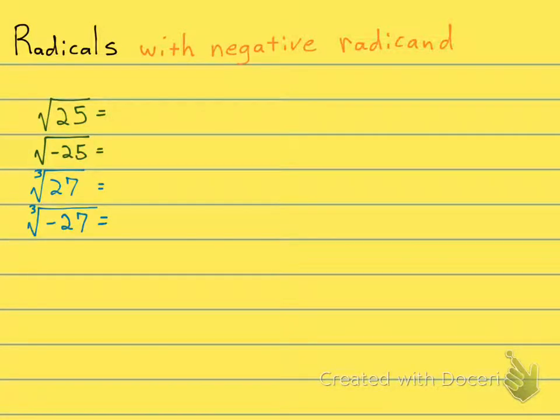Let's talk about radicals with negative radicands. The radicand is the thing underneath the radical symbol, and we see we have two of them right here. Negatives in the radicand.